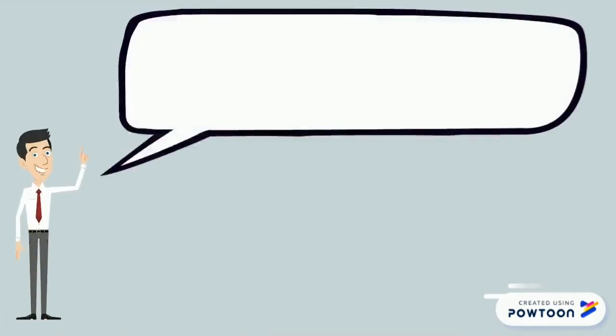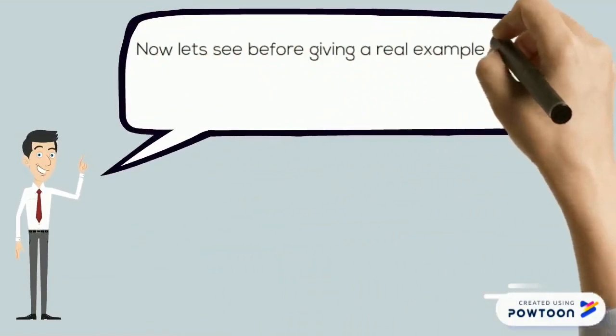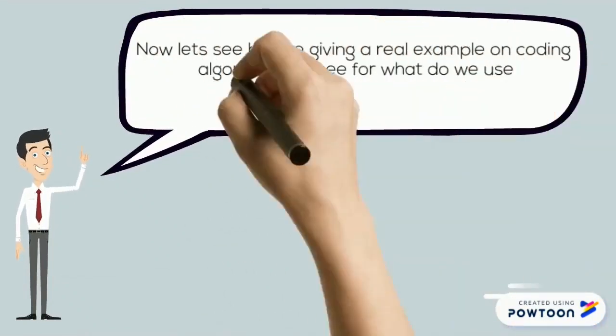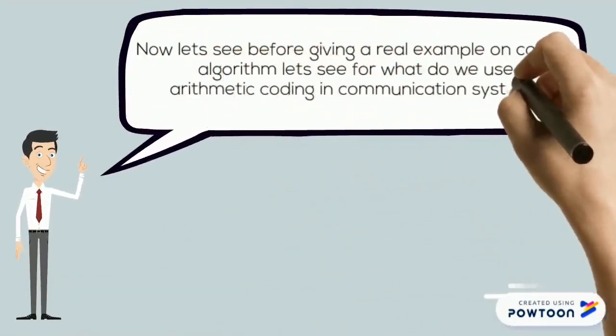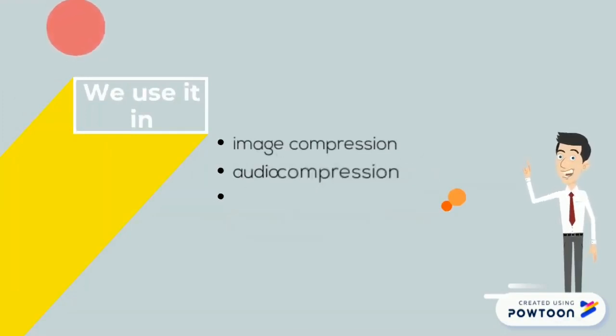Now, before giving a real example on coding algorithm, let's see what we use arithmetic coding for in communication systems. We use it in image compression, audio compression, and video compression standards.